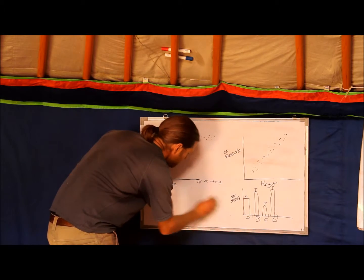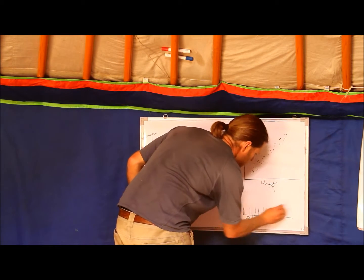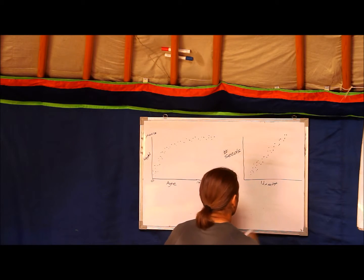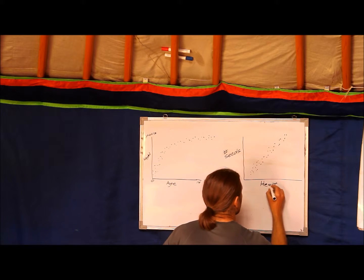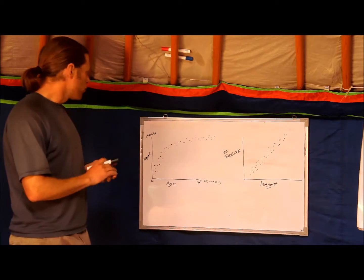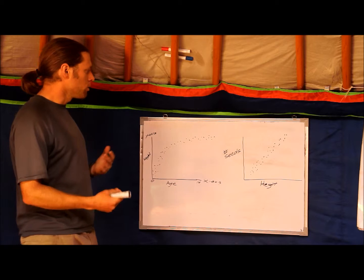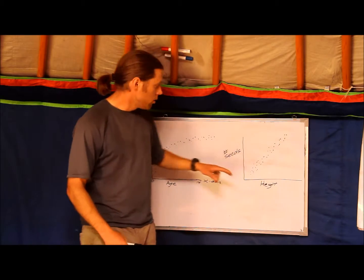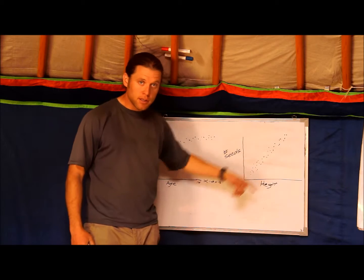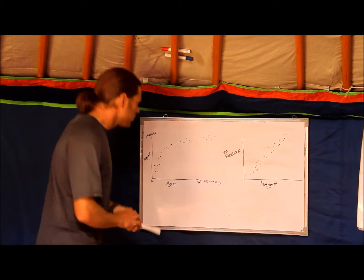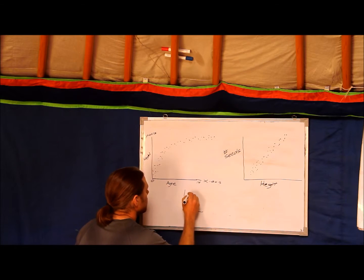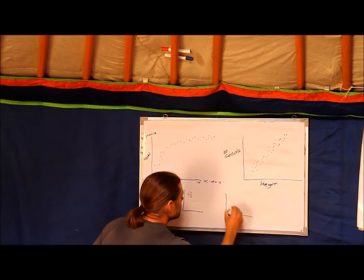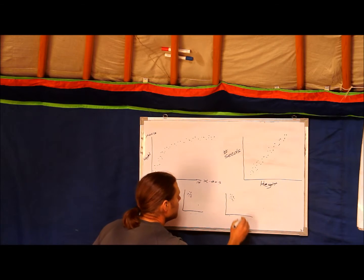With two quantitative variables graphed out in scatter plots, you want to look at relationships and patterns. Some things you want to look for: is the relationship positive or negative? Does it fit a line or is it a curve? Are there outliers? And does it have clusters — maybe a bunch of points here and another bunch of points there?